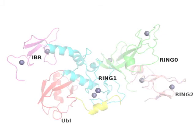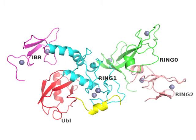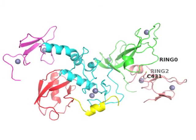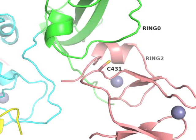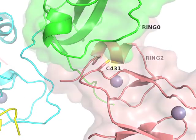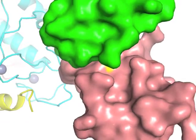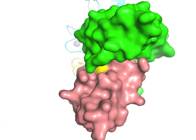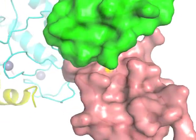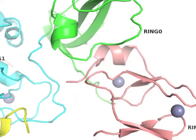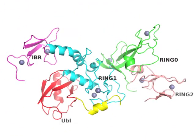The activity of Parkin consists in transferring a small molecule called ubiquitin onto a substrate, which signals its degradation. The C431 site in RING2 is required for this activity, and its mutation causes Parkinson's disease. C431 is occluded by the RING0 domain, here shown in green, suggesting that the protein is auto-inhibited and requires rearrangements in order to expose that site.